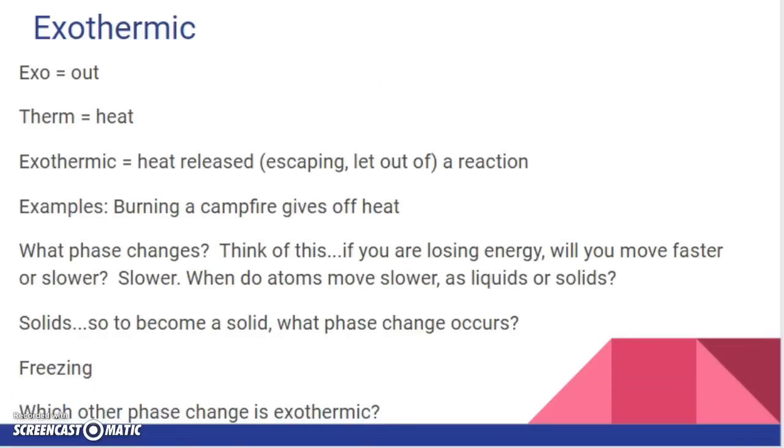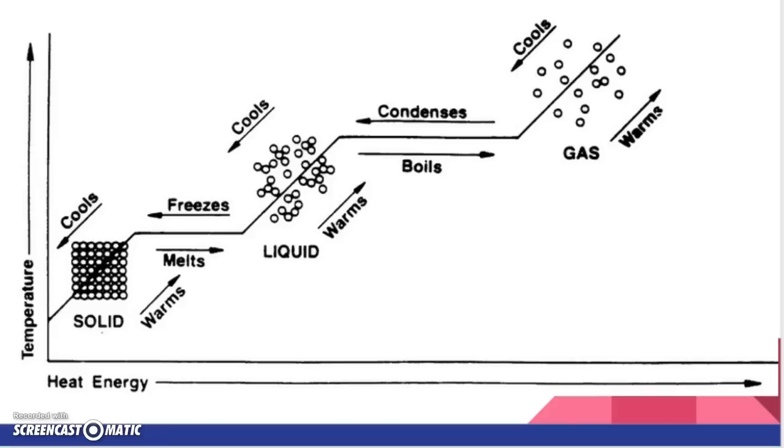Which other phase change is exothermic? Think it through. We said that we're having energy, in this case heat, going out. If I'm losing energy, I'm going slower. Solids are moving the slowest as far as atoms. Which one is the second slowest? Liquids, gas, plasma. Liquids. So that means I'm going to be making liquids from something that was going faster. So gas is changing to liquid. What is it called when a gas changes to liquid? Condensing. Make sure you have this written down. I suggest writing down the tip because people get confused about this because they start to think it feels warm or it feels cold. No, no. You've got to think about the speed of the atoms.